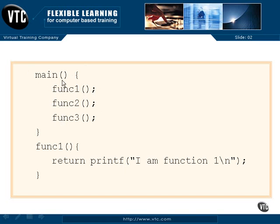Here we have main with open and close paren, no semicolon, and then an open brace — so we're defining what's in main. Here in func one, open and close parentheses and a semicolon — that makes this a statement, so we are calling or executing function one. Statement execution will come down here to func one, wherever it happens to be defined. Func one is being defined down here with our open brace and close brace, and here are the contents of function one.